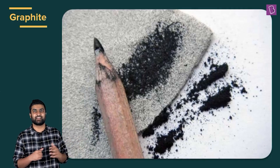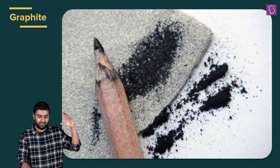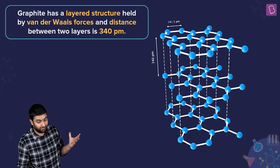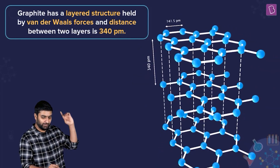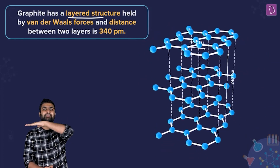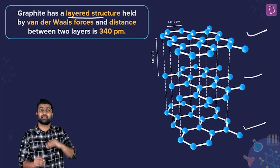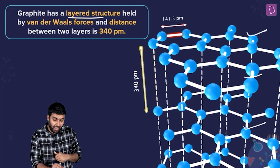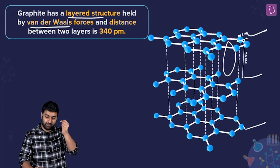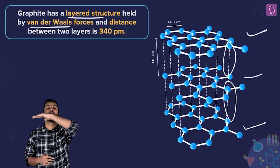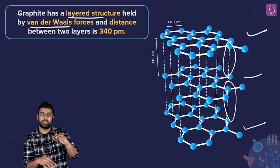Let's take the case of graphite — something we've been interacting with for a long time. As you can see, it has a layered structure: layer after layer after layer. These layers are held together by van der Waals forces, as shown by the dotted lines between them.